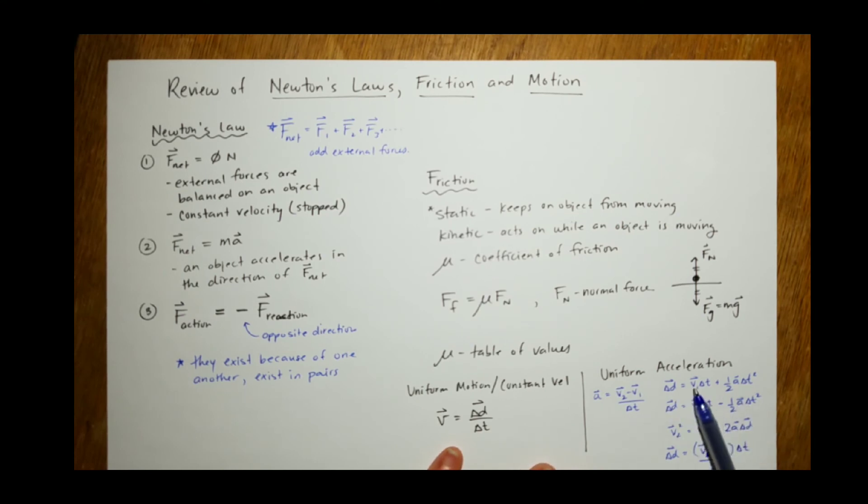And displacement equals V1 times time plus one-half A delta T squared. Displacement equals final velocity times time minus one-half A delta T squared.